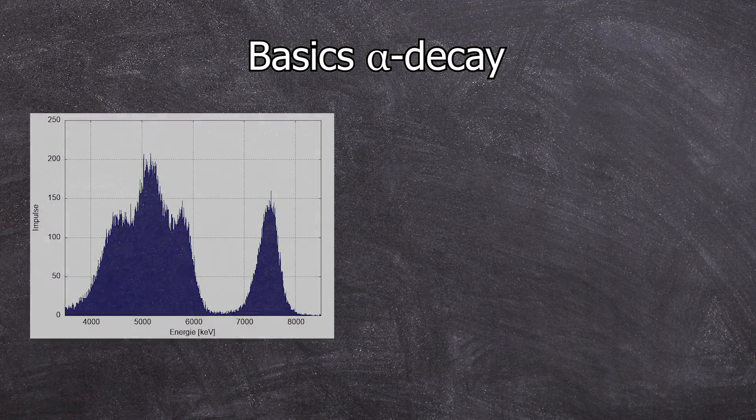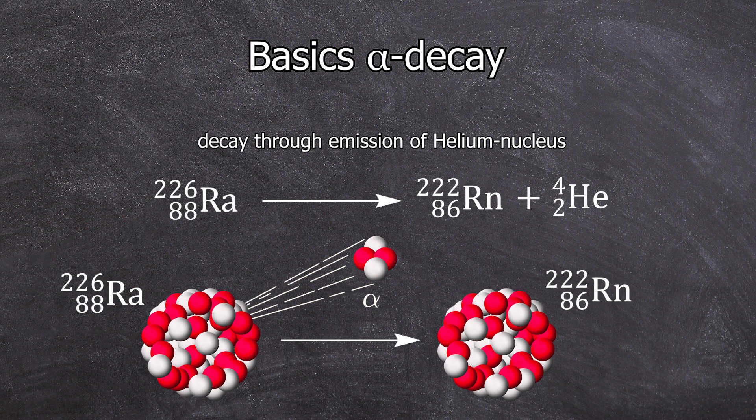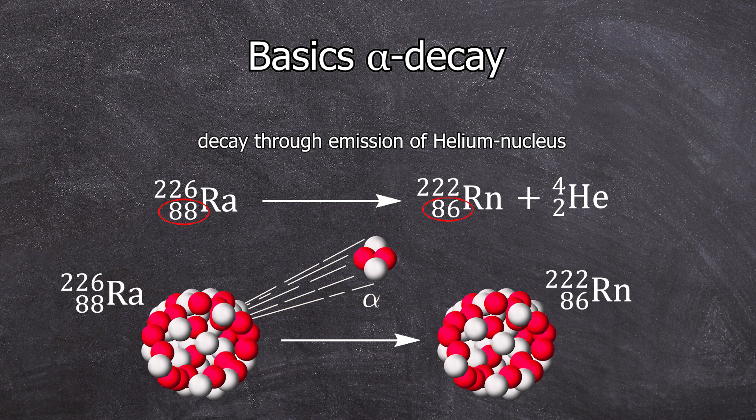Let's revisit some basics about the alpha decay first. Alpha decay involves the emission of a helium nucleus from the decaying nucleus. Alpha emitters are typically heavy nuclei, and through the alpha decay, both the element and the mass number changes. The proton number decreases by two, and the mass number decreases by four.